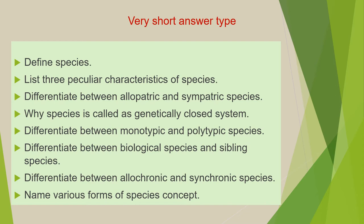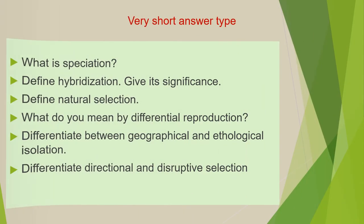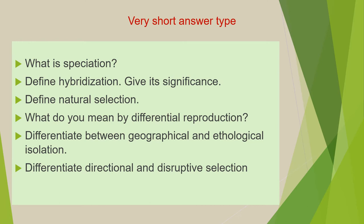Next is: differentiate between monotypic and polytypic species. Next is: differentiate between allochronic and synchronic species. Next is: name various forms of species concept. Next question is: what is speciation? Next is: define hybridization and give its significance. Next is: define natural selection. Next is: what do you mean by differential reproduction?